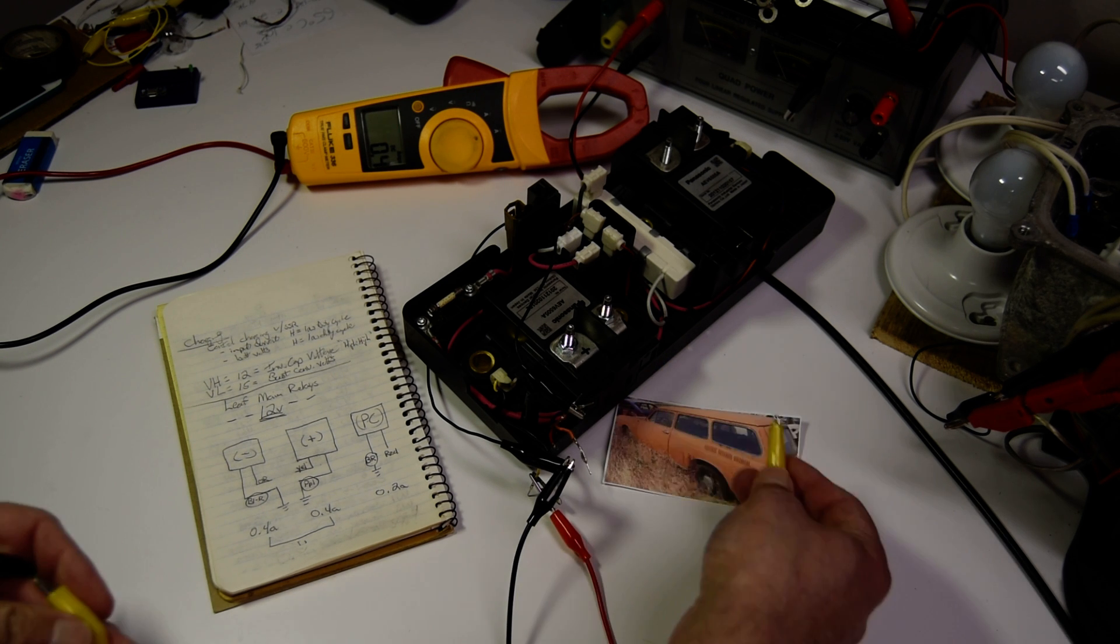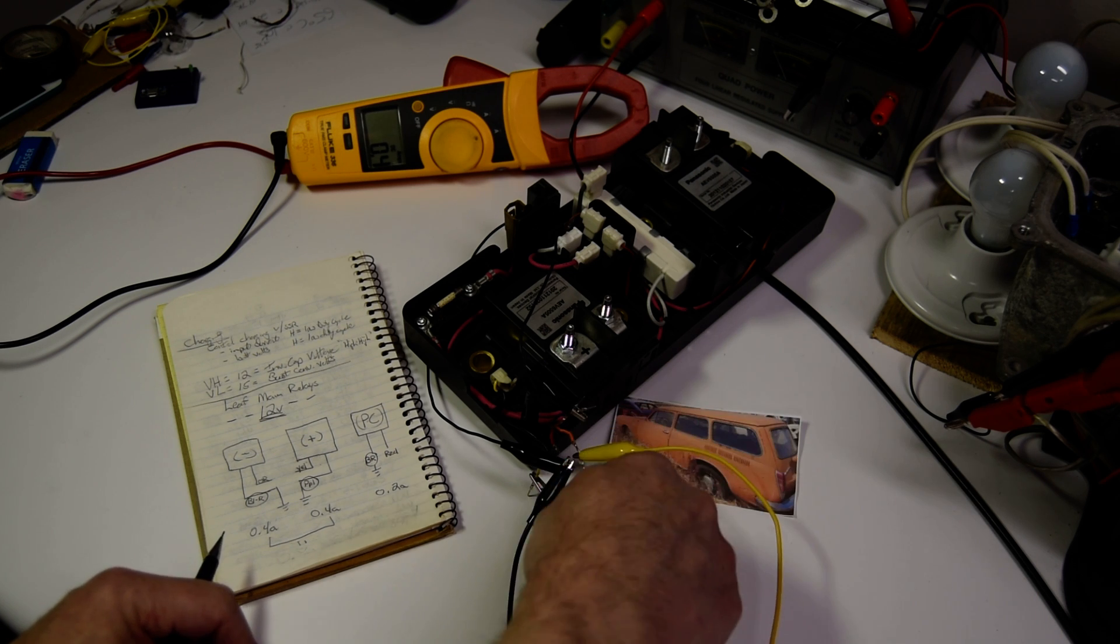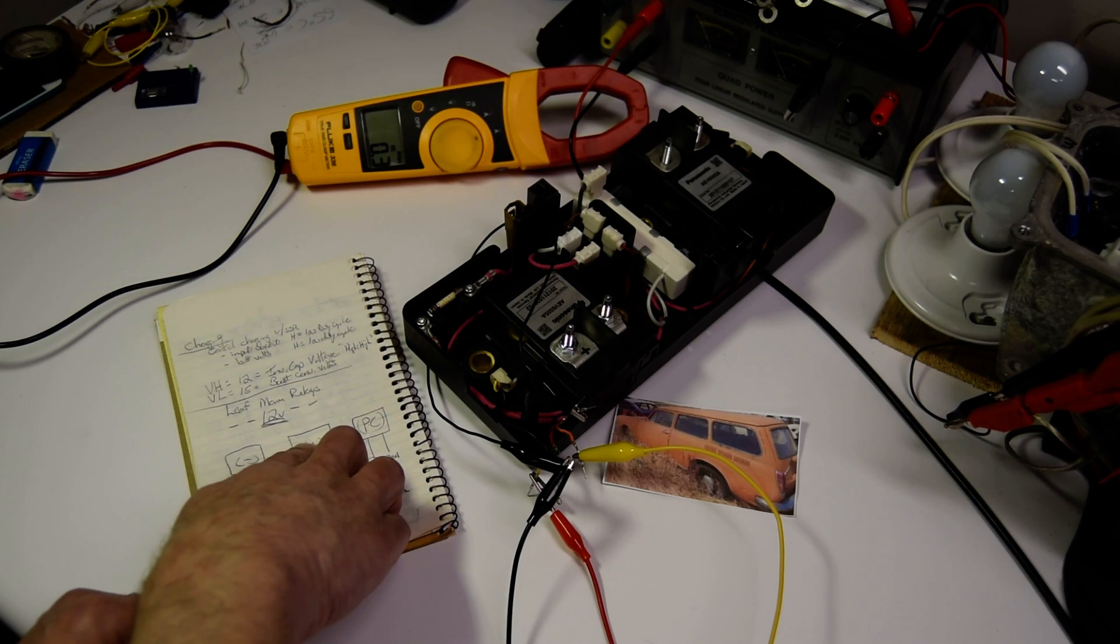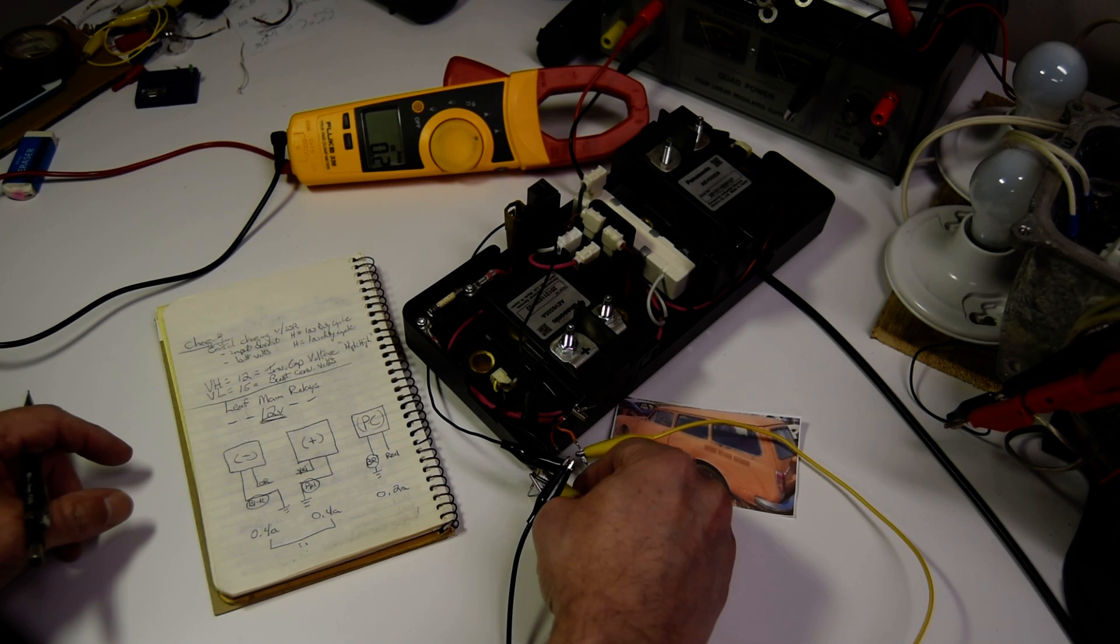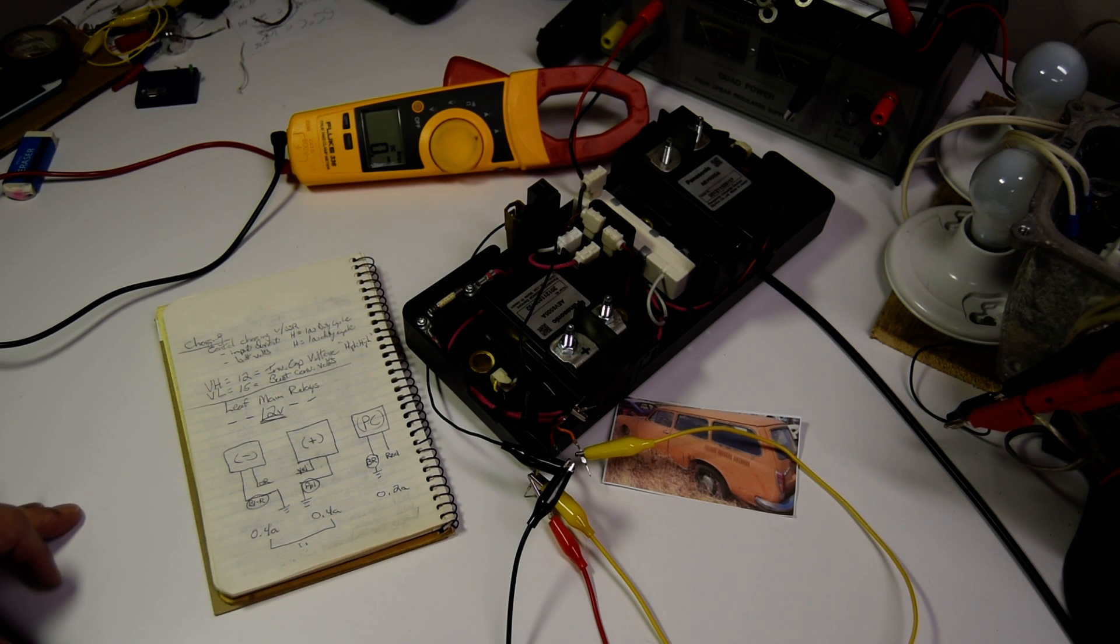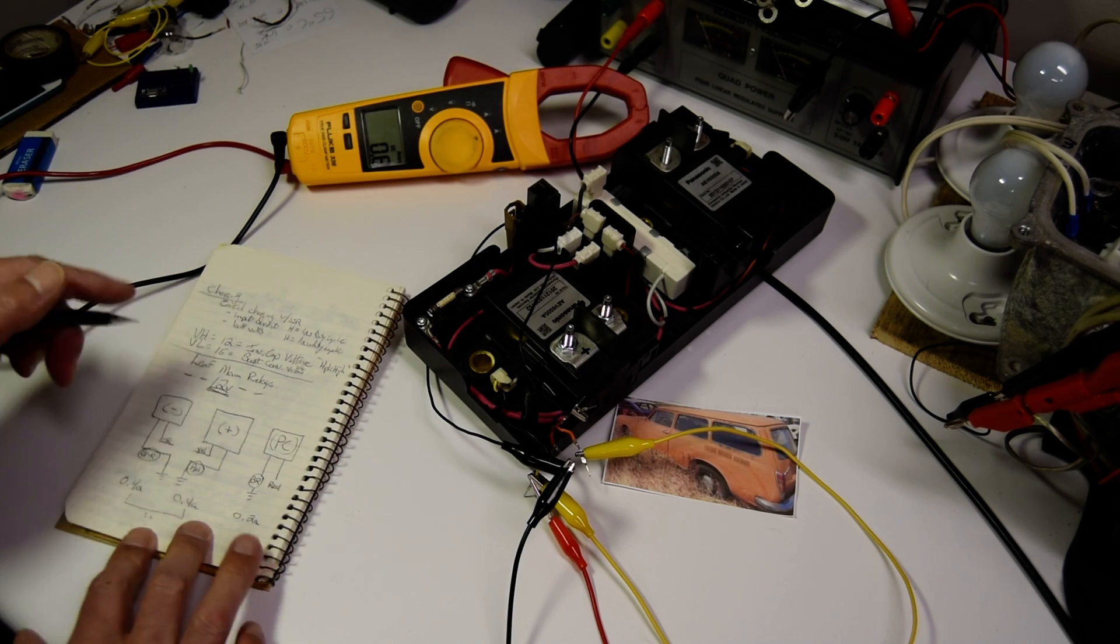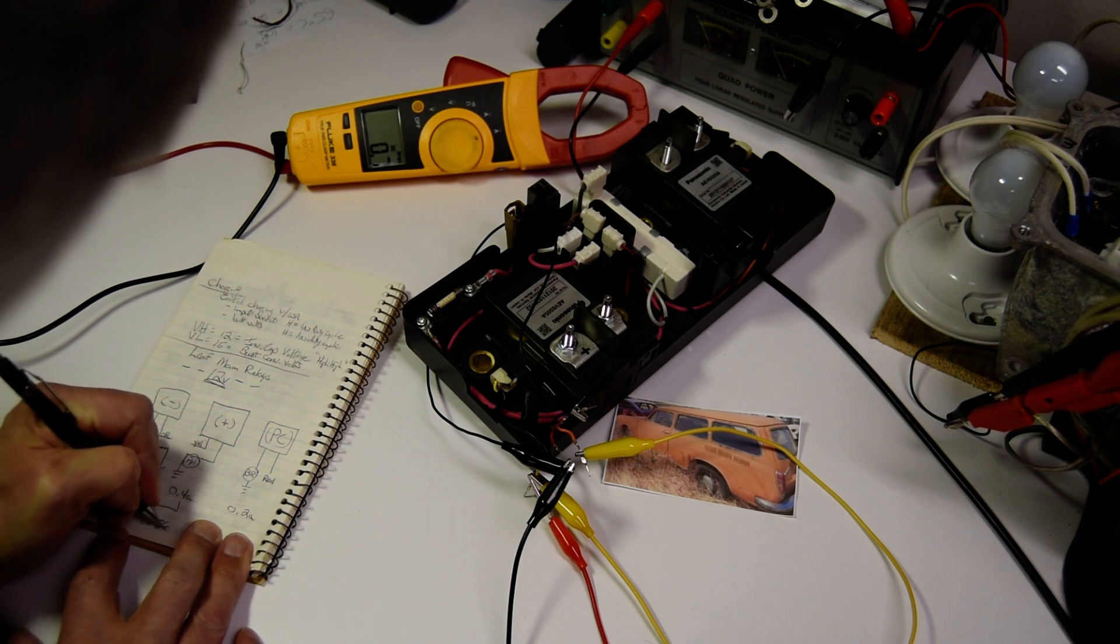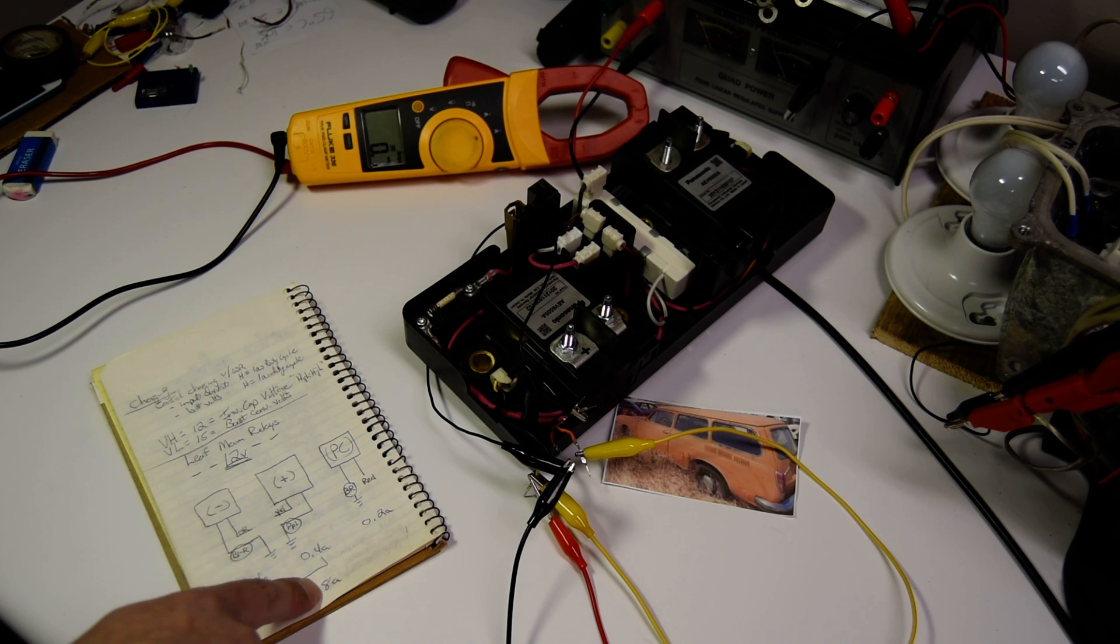All right, so orange is my ground relay, yellow is my positive relay. Let's see how many amps they draw together. Should be 0.8 approximately. Yep, and there we see 0.7 and then 0.8. Right, so that's 0.8 amps.